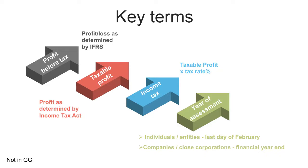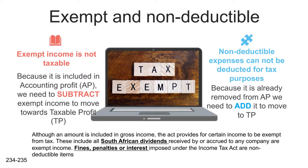For individuals, SARS tells us what our year of assessment is — 1 March to 28 February — regardless of how you plan. For companies the financial year and year of assessment are the same. Income tax is the product of taxable profit multiplied by the tax rate — that's the income tax expense.